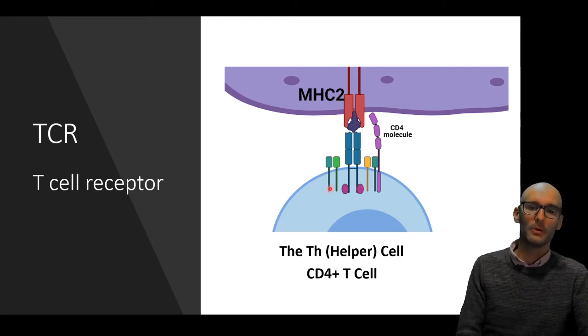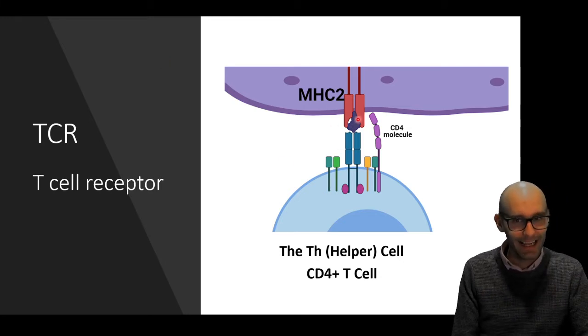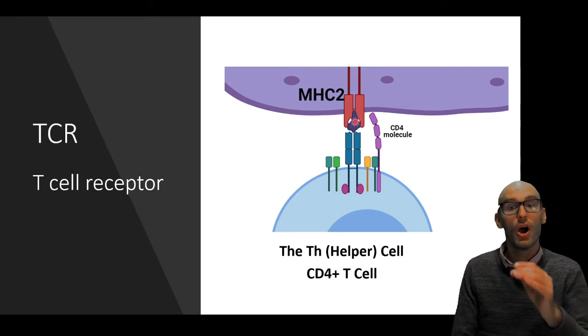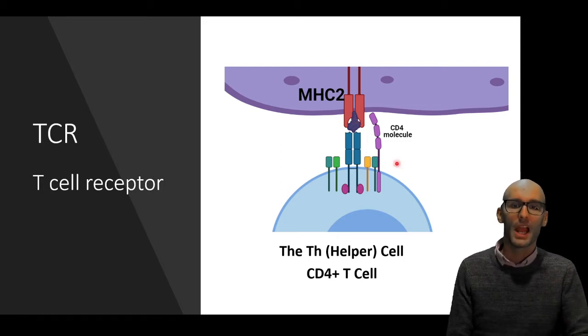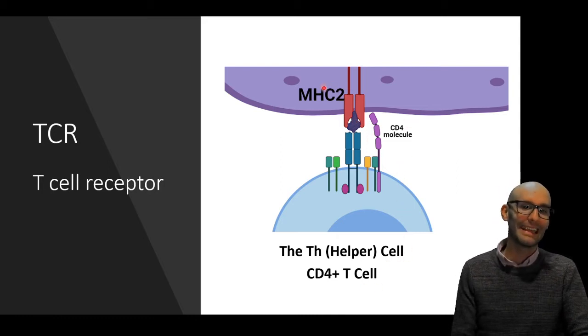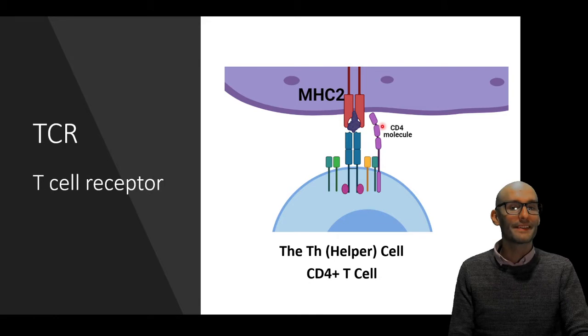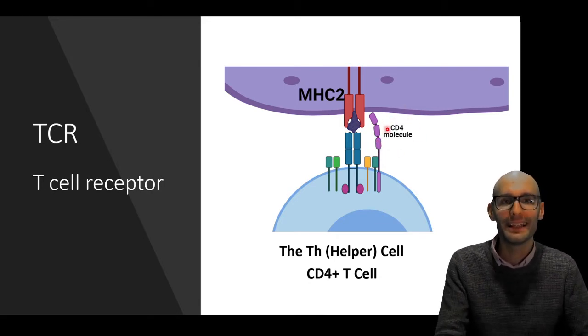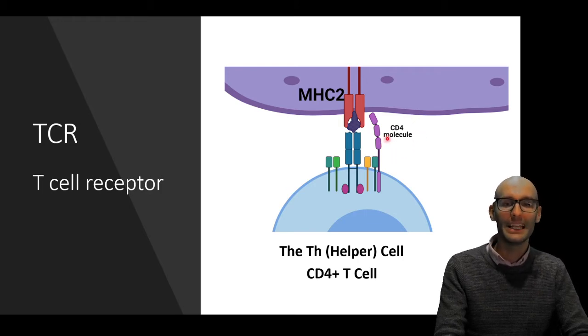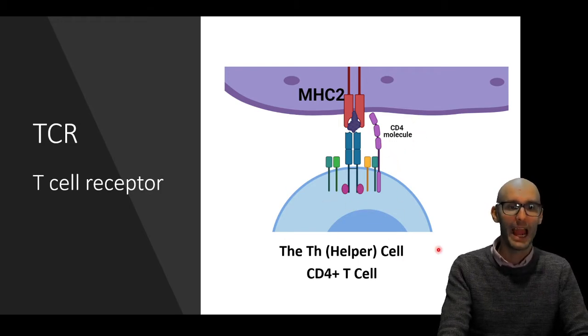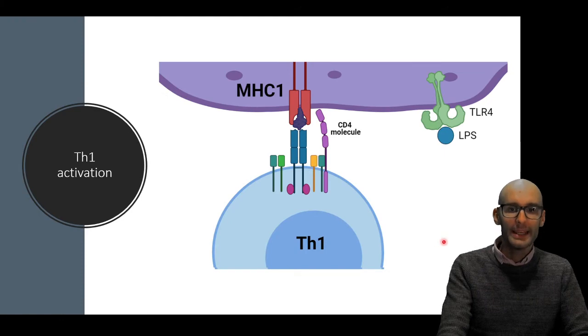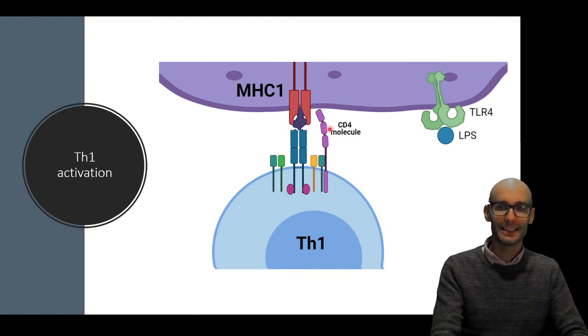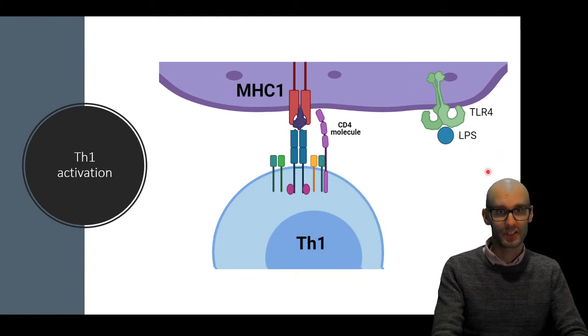So here we have a T helper cell. And it has detected an antigen from an antigen presenting cell on an MHC2 molecule. We know it's a T helper cell because it detects that MHC2 with a CD4 molecule. If it was a cytotoxic T cell, it would be a CD8 molecule. But it's a CD4 molecule. So that's how we know this is a T helper cell.